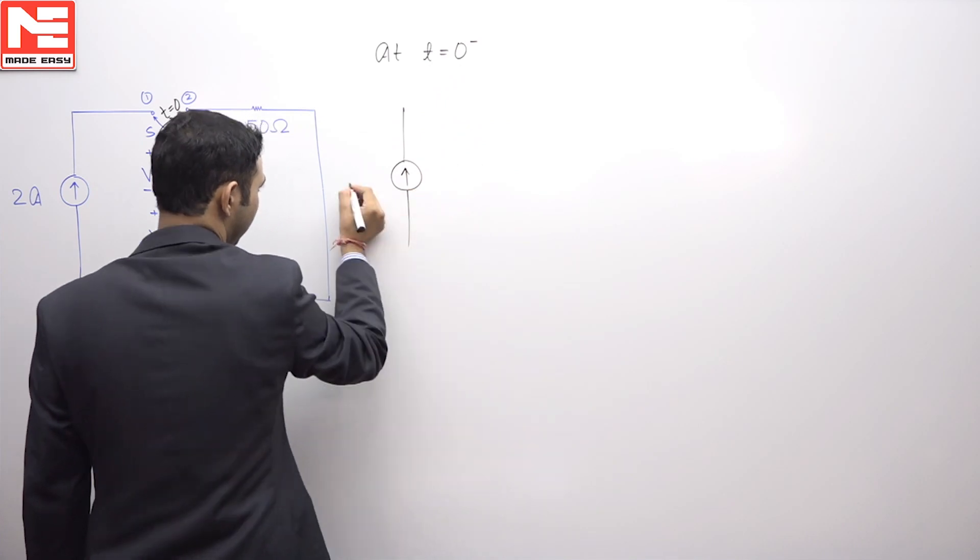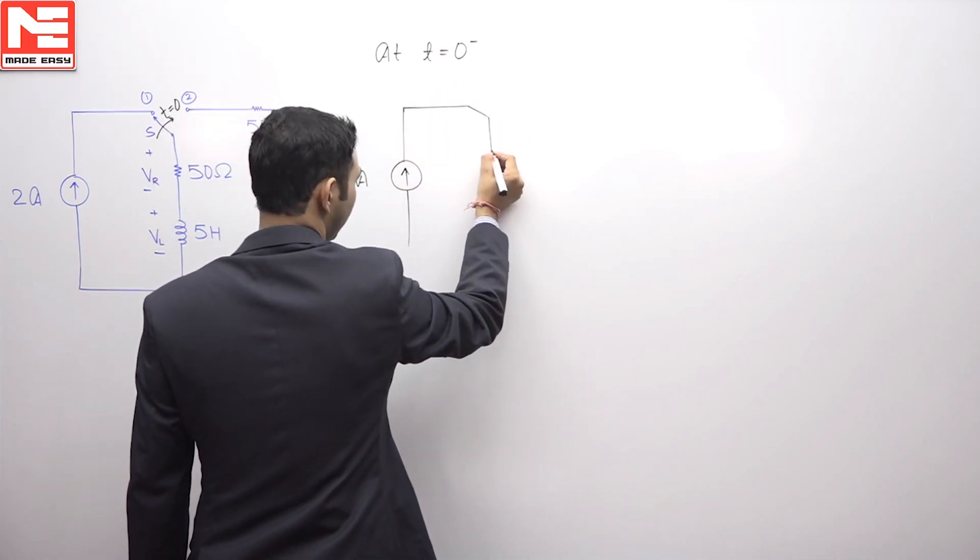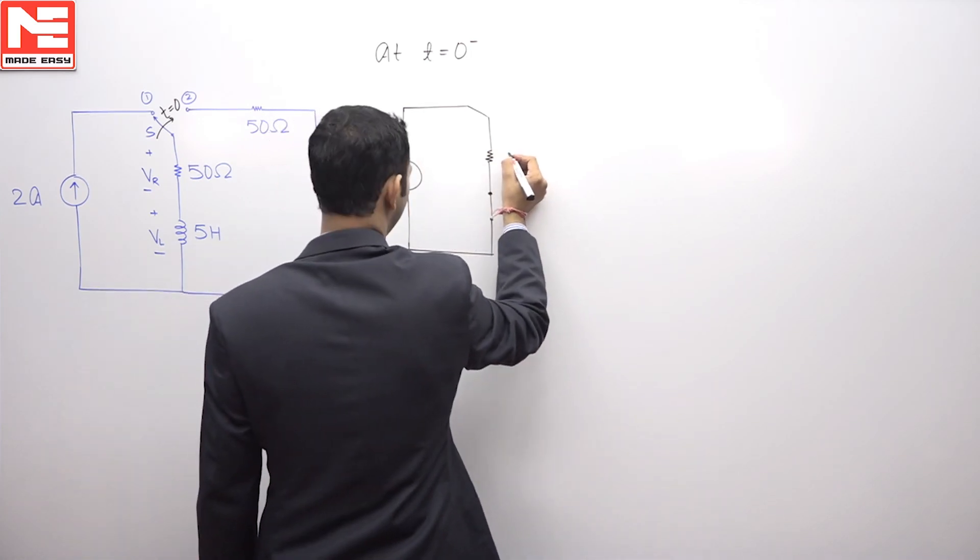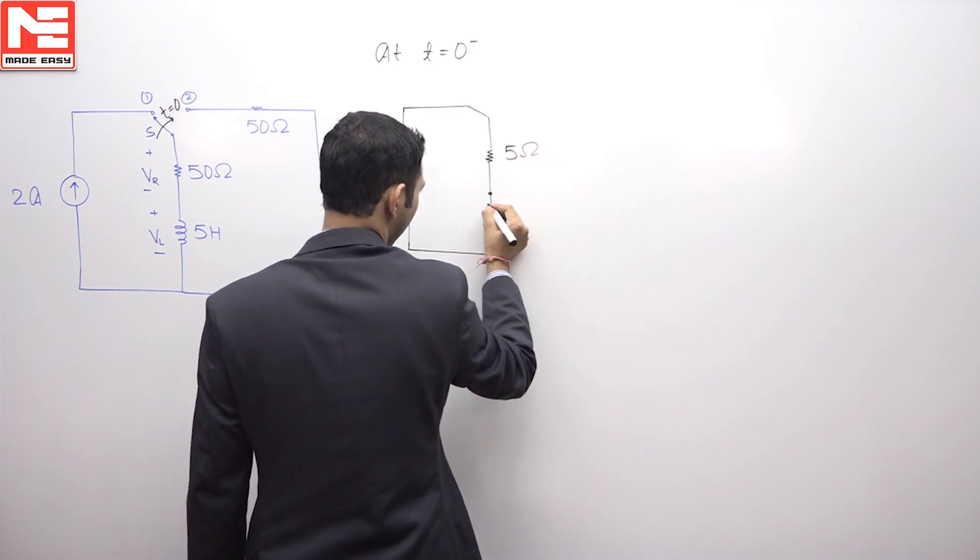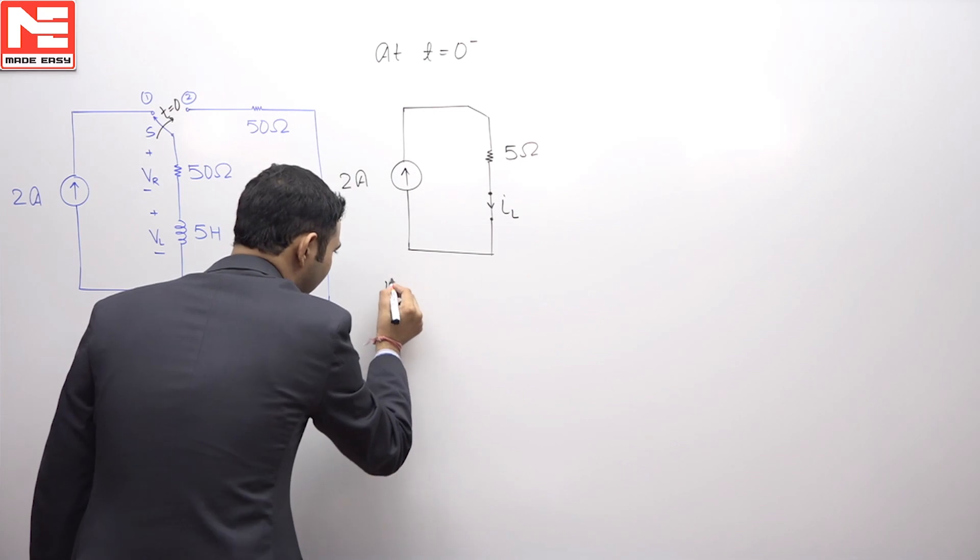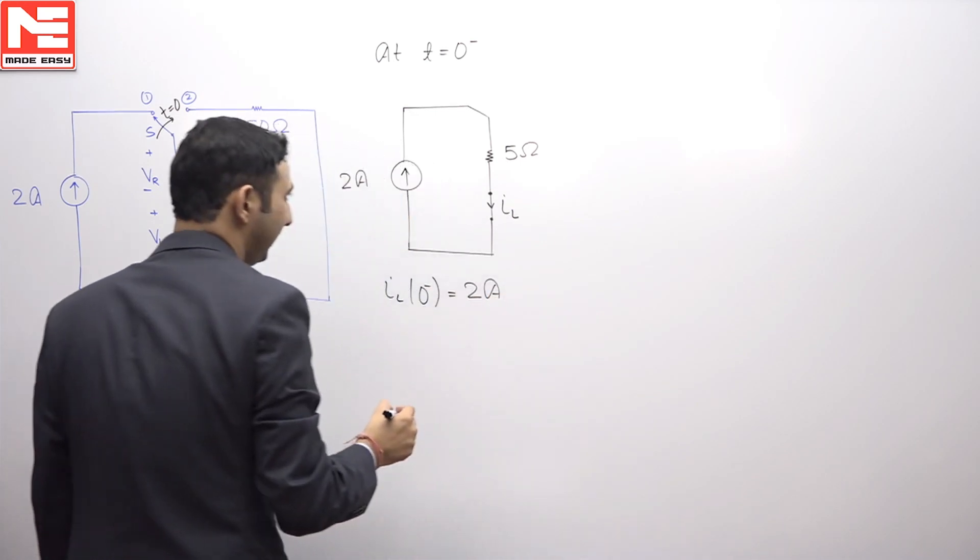This is 2 ampere. The switch was at position 1, 50 ohm, and the circuit was in steady state. So inductor will be acting as a short circuit. This is 5 ohm and therefore, this whole 2 ampere will be flowing from here. Therefore, I can say that IL(0-), this is coming as 2 ampere.